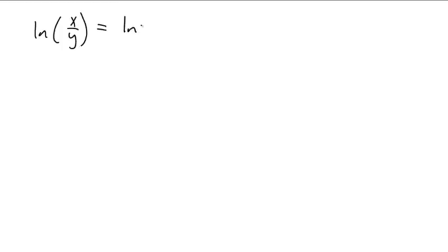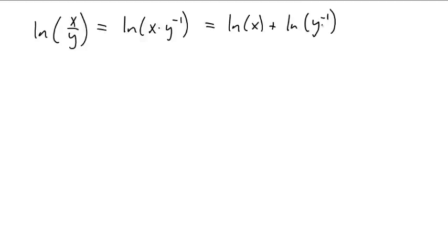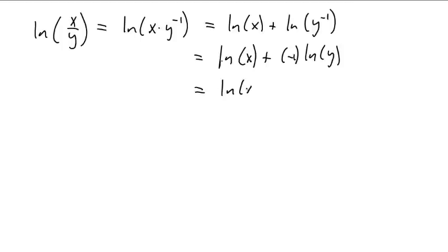The third standard property is ln(x/y). We don't have to redo the whole proof — this is the natural log of x times y^(-1). We've just proven that ln of a product splits into a sum, and that exponents come out front. So this is ln(x) + (-1)·ln(y), which is ln(x) minus ln(y). That is your standard rule: when you divide, you subtract logarithms.